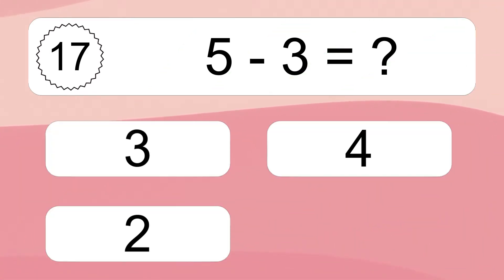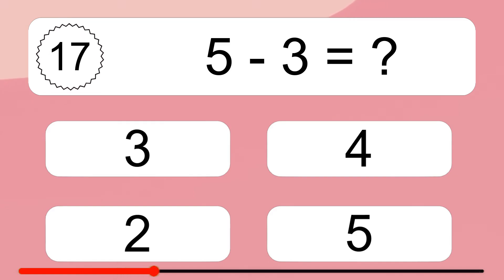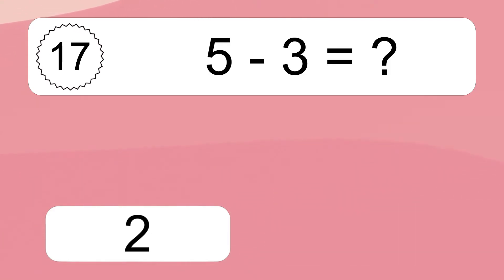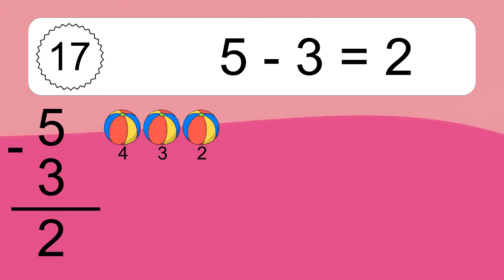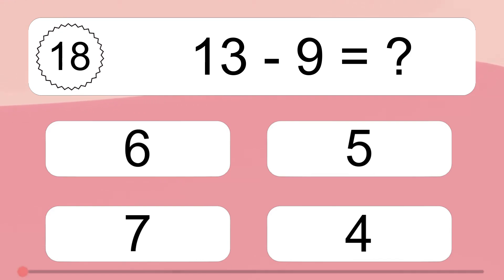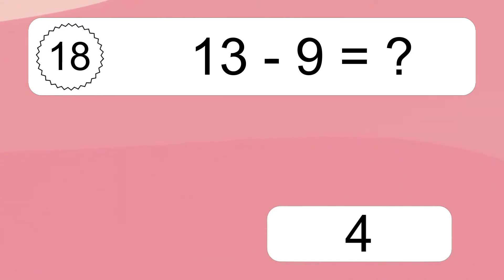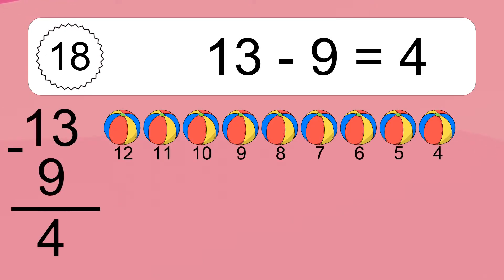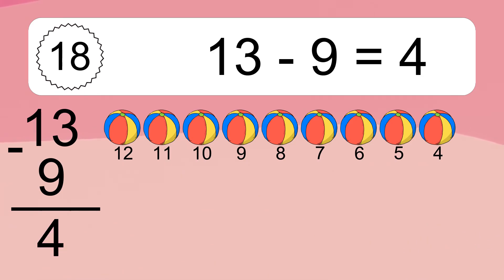5 minus 3 equals what? 5 minus 3 equals 2. Let's count it: 4, 3, 2. 13 minus 9 equals what? 13 minus 9 equals 4. Let's count it: 12, 11, 10, 9, 8, 7, 6, 5, 4.